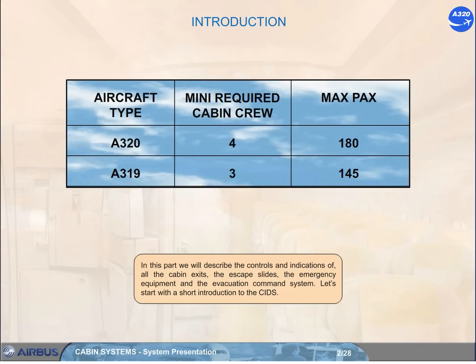In this part, we will describe the controls and indications of all the cabin exits, the escape slides, the emergency equipment, and the evacuation command system.